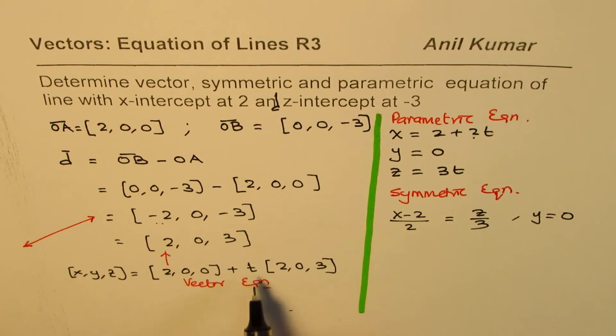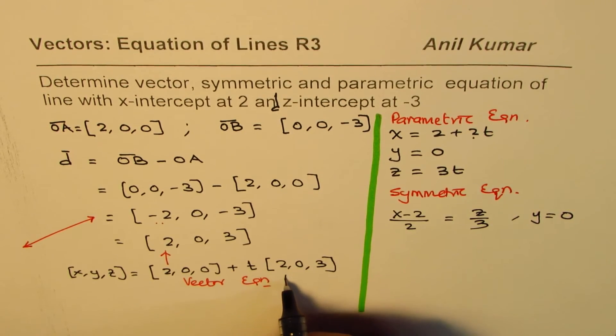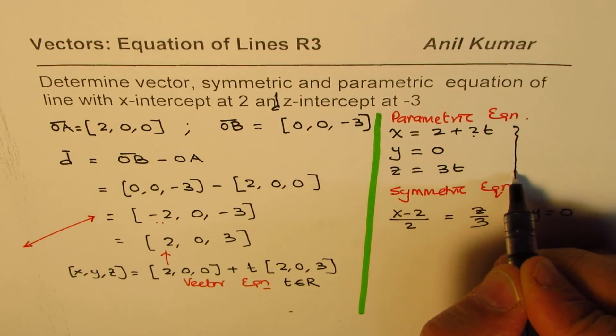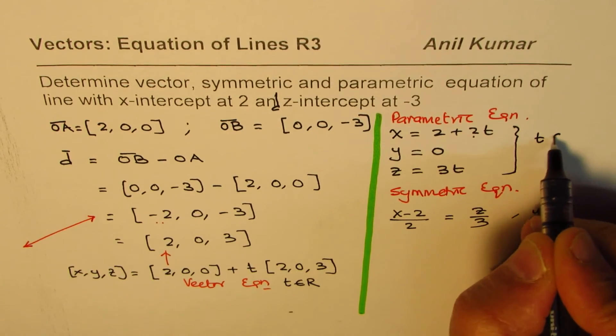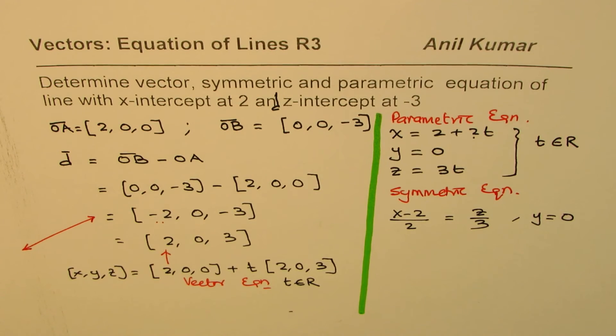whenever we use this parameter t, it's good practice to always mention that t belongs to real numbers. So, in this parametric equation, t belongs to real numbers. So, that is how we can actually write each kind of equation from the given condition. I hope that helps. Thank you. And all the best.